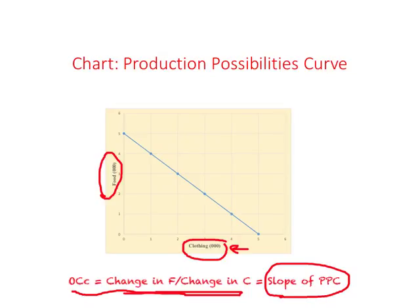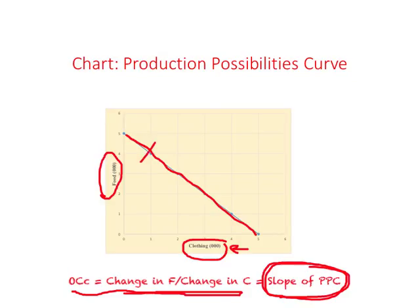From the previous table, Opportunity Cost of Clothing stays the same throughout — whether at point A, B, C, D, E, or F, the OCC is negative one. Since OCC equals the slope of the PPC, we ask: why negative? Simply because the PPC is downward sloping. And why is the value fixed at all points? Because the PPC is a straight line. When slope has a fixed value, we are looking at a straight line. So if OCC is constant throughout, you will have a straight-line PPC.